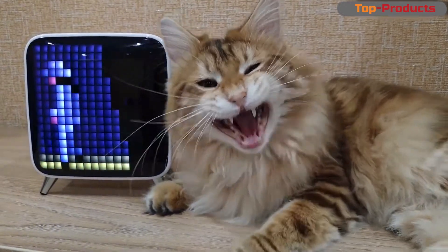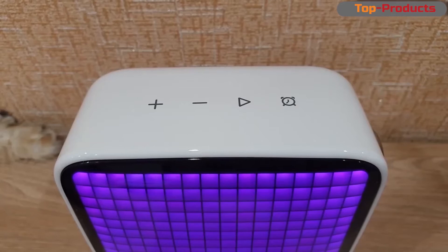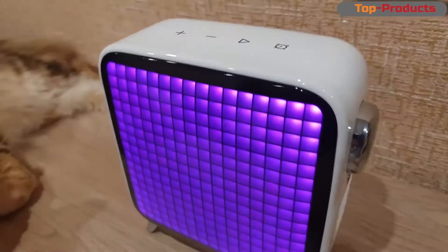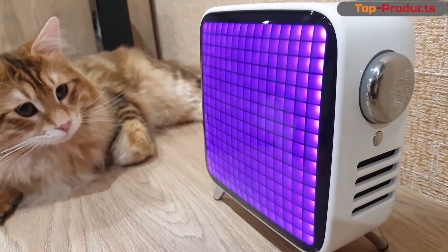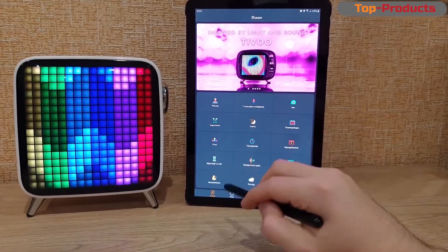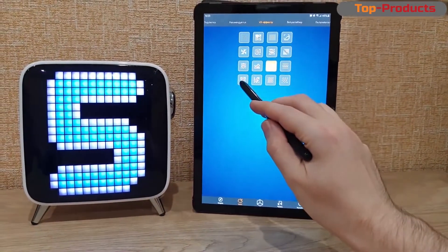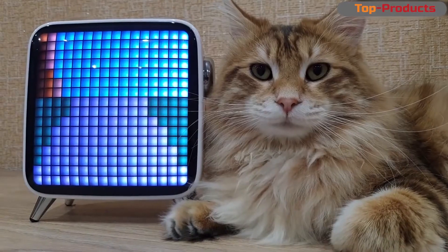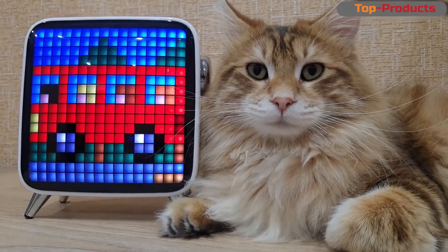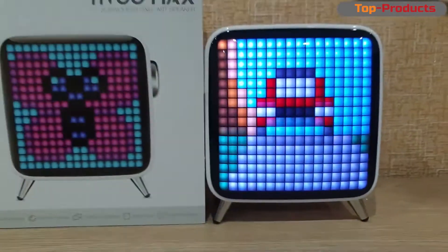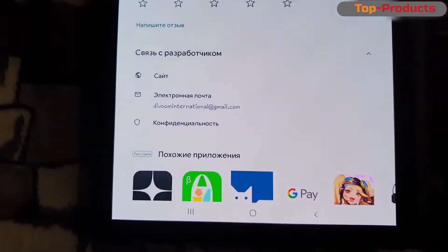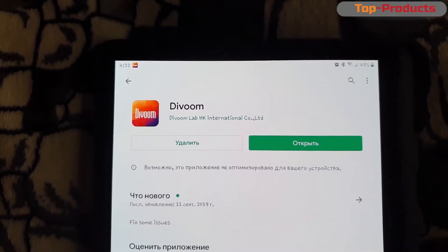This is a smart speaker with a Divoom Tivoo Max pixel display. It has just a few touch buttons and an image change slider. Full functionality reveals the application that you must download. Through the application you can activate the alarm clock, watch the weather, receive notifications from different instant messengers, draw on the TV screen, play pixel games like Tetris. You can create your own music mixes.